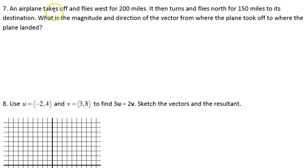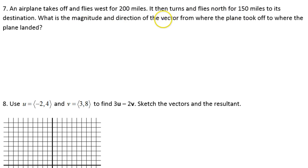An airplane takes off and flies west for 200 miles. Then it turns and flies north for 150 miles to its destination. What is the magnitude and direction of the vector from where the plane took off to where the plane landed?